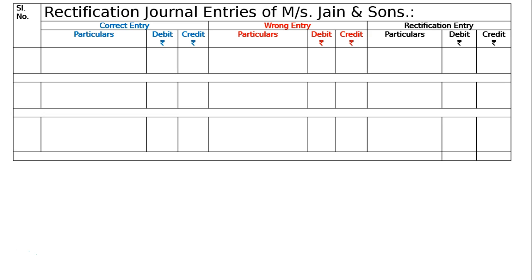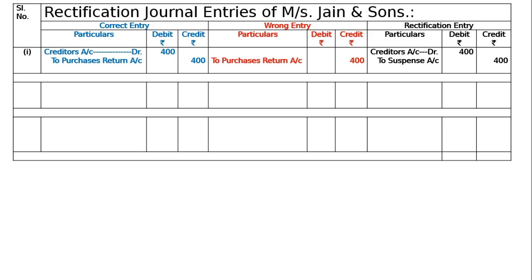Purchase returns — that is, creditors account debited to purchase returns account, 400 — has not been posted to the ledger. Here the ledger is the creditors ledger. This will be dash to purchase returns account 400. Hence we will write in the debit to rectify the mistake as creditors account debit 400. There is no other error for the account or the amount, so the difference will go to suspense account. Hence the rectifying entry will be: creditors account debit 400 to suspense account 400.